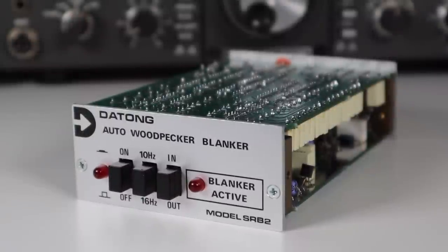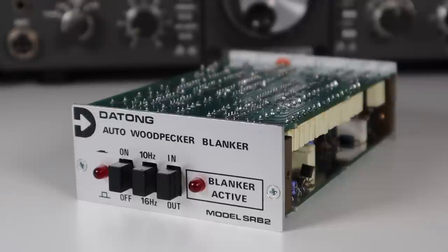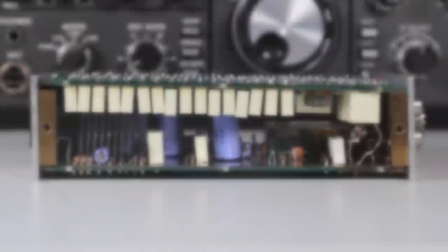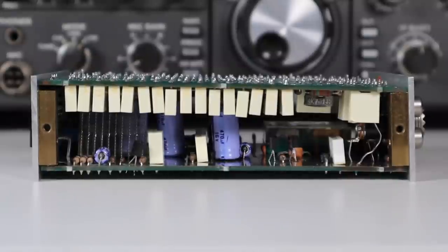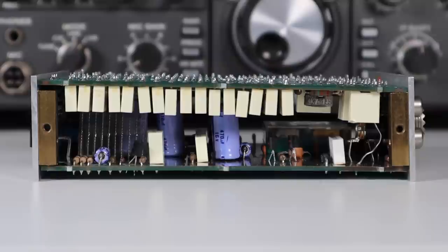So this box is basically an audio frequency notch filter, which is a type of filter that attenuates or reduces a specific frequency range in an audio signal. They're also known as band stop filters or band reject filters. This notch filter worked by allowing all frequencies to pass through except for a specific frequency range which was attenuated or blocked.